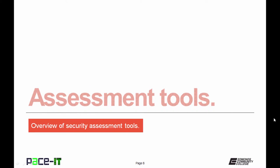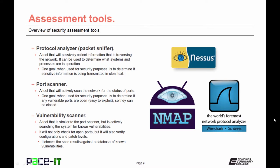It is time to move on to assessment tools. We will begin with the protocol analyzer, also sometimes known as a packet sniffer. It is a tool that will passively collect information on what is traversing the network and can be used to determine what systems and processes are in operation. One goal when used for security purposes is to determine if sensitive information is being transmitted in clear text on the network. Then there are port scanners — a tool that will actively scan the network for the status of ports. One security goal is to determine if any vulnerable ports are open, as open ports may be easy to exploit, helping to find ports that should be closed.